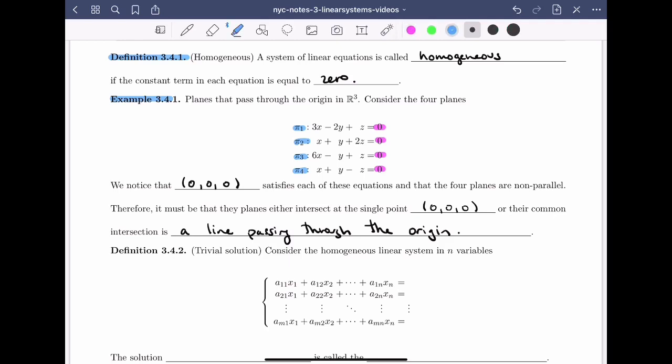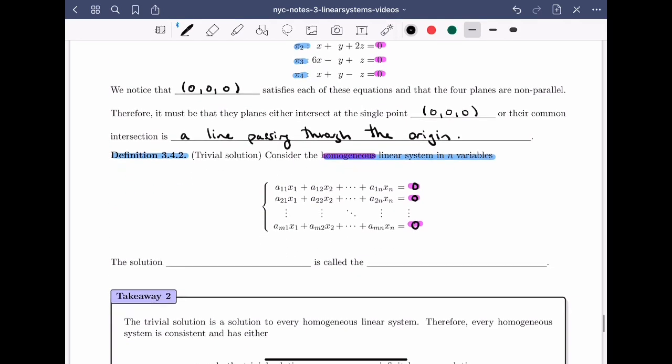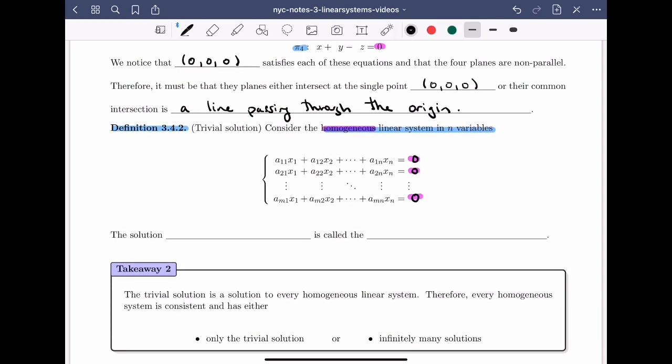Okay, so let's move on to definition 3.4.2. Consider the homogeneous linear system in n variables. So here I have this linear system, but wait a minute, I missed something to the right-hand side of each equation here. I haven't put in the constants, but the fact that the linear system is homogeneous tells me that those constants all have to be zero. So let's fill those in first. So I have that the first equation has to be equal to zero, the second equation has to be equal to zero, all the way down to the m-th equation, which also has to be equal to zero.